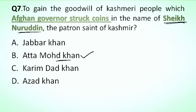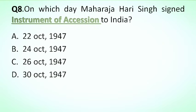Next question is: on which day did Maharaja Hari Singh sign the Instrument of Accession to India? Options: A. 22 October, B. 24 October, C. 26 October, D. 30 October. The correct answer is 26 October 1947. On 22 October 1947, tribalists raided Kashmir.